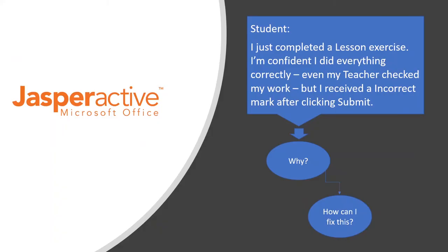Hello, this is Keith German with CCI Learning. I'm coming to you today with a brief overview of one of our primary support issues that's often reported by a student and/or their teacher. The issue is that the student has gone into the Jasper Active Microsoft Office Specialist system, completed a lesson exercise, felt very confident they did everything correctly — often having a classmate or teacher check their work — and yet they still receive an incorrect mark after clicking submit.